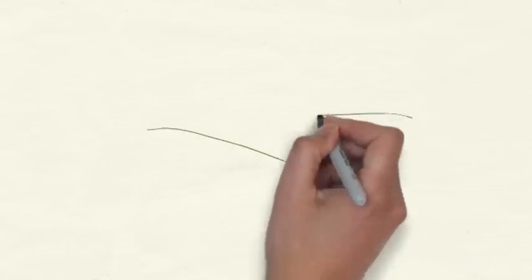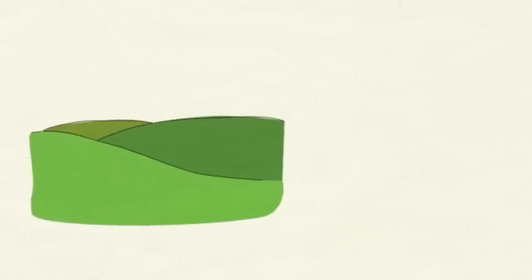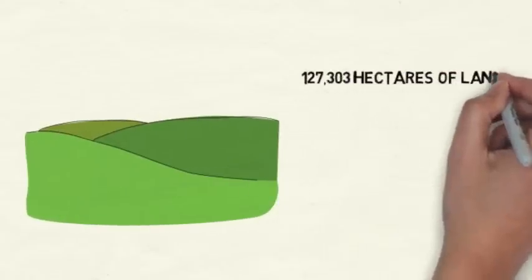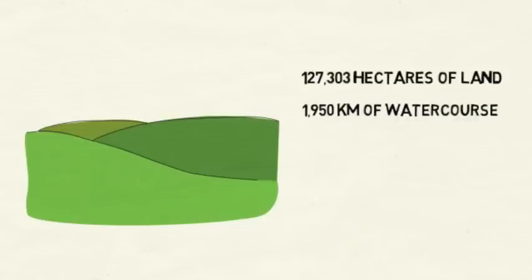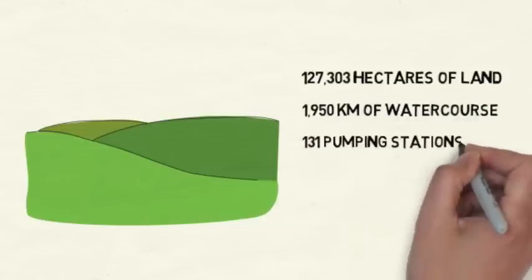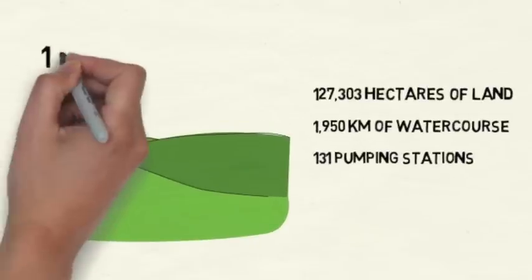Through the Shire Group of Internal Drainage Boards, JBA Consulting is responsible for overseeing more than 127,000 hectares of land and maintaining nearly 2,000 kilometres of watercourse and 131 pumping stations.